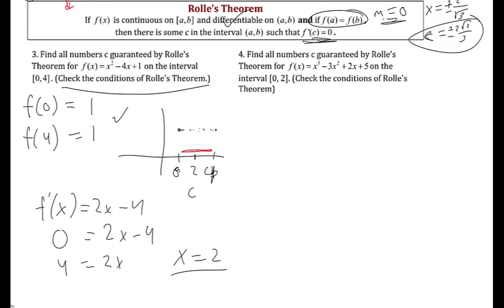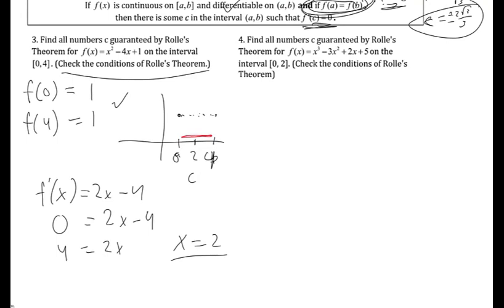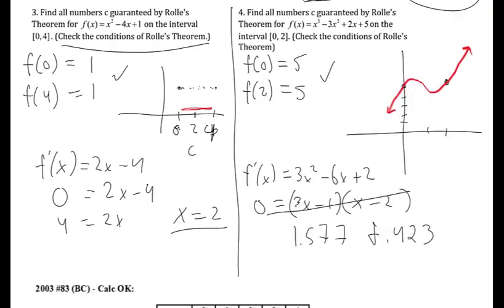The most important thing to get from Rolle's theorem is that it's exactly the same as mean value theorem — just the specific case where f(a) = f(b). For the next example, the conditions for Rolle's theorem check out: f(0) = 5 and f(2) = 5, so those are equal, meaning the overall slope is 0. Graphing in the calculator I can see there appear to be two places, two values of c, where the slope is also 0.